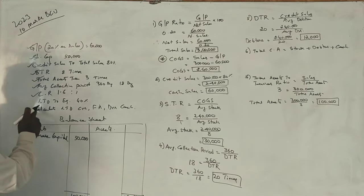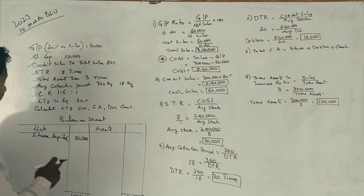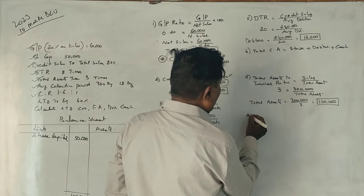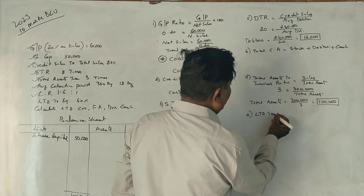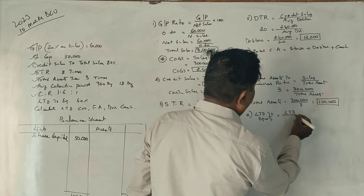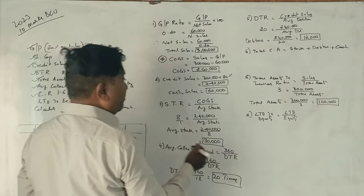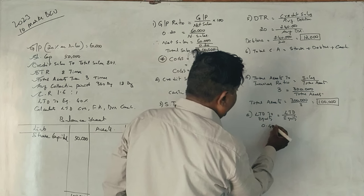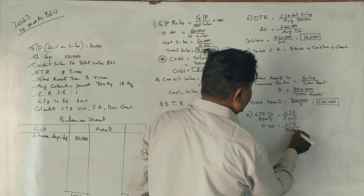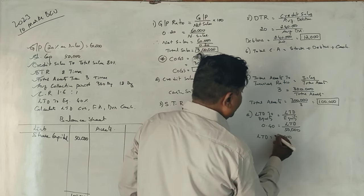Long-term debt to equity is 40% of equity. Total share capital is Rs. 50,000. Long-term debt to equity ratio equals long-term debt divided by equity, which is 40%. So long-term debt equals 40% of Rs. 50,000, giving long-term debt equal to Rs. 20,000.